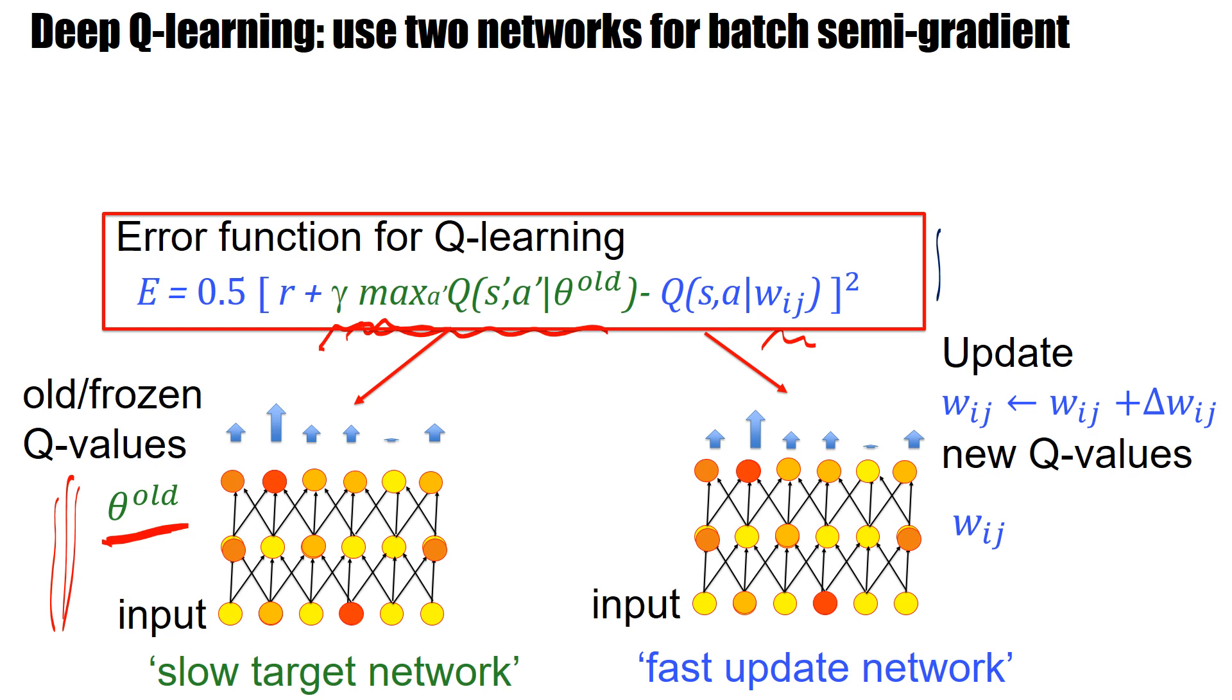And then we collect many state action pairs, many state action next state next action pairs to average over these. So we have an additional network which tries to implement the consistency to improve the consistency condition of the Bellman equation. And the parameters of this weight, these weights w_ij, they are updated online with state action reward state transitions.